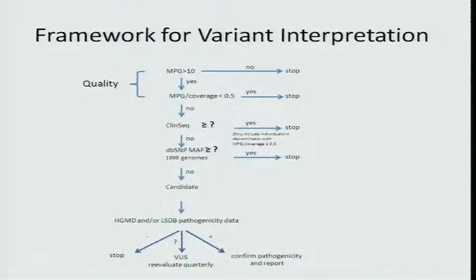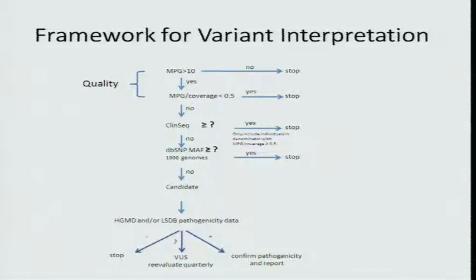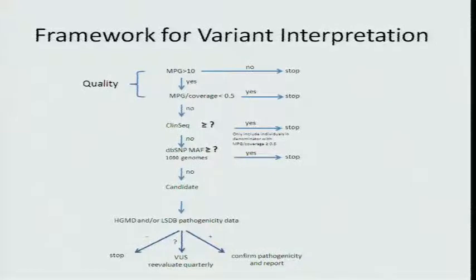We then applied a bunch of filters to try and get that down to something more manageable. Our first set of filters were what we call quality filters — we didn't feel we should spend a lot of time struggling with variants if we didn't even have good data to suggest that they were real sequence findings. We have our own internal quality metrics, and overall what we're trying to do is take large numbers of candidate variants and find valid reasons to push them out of consideration so we can focus on the ones that we should be focusing on.